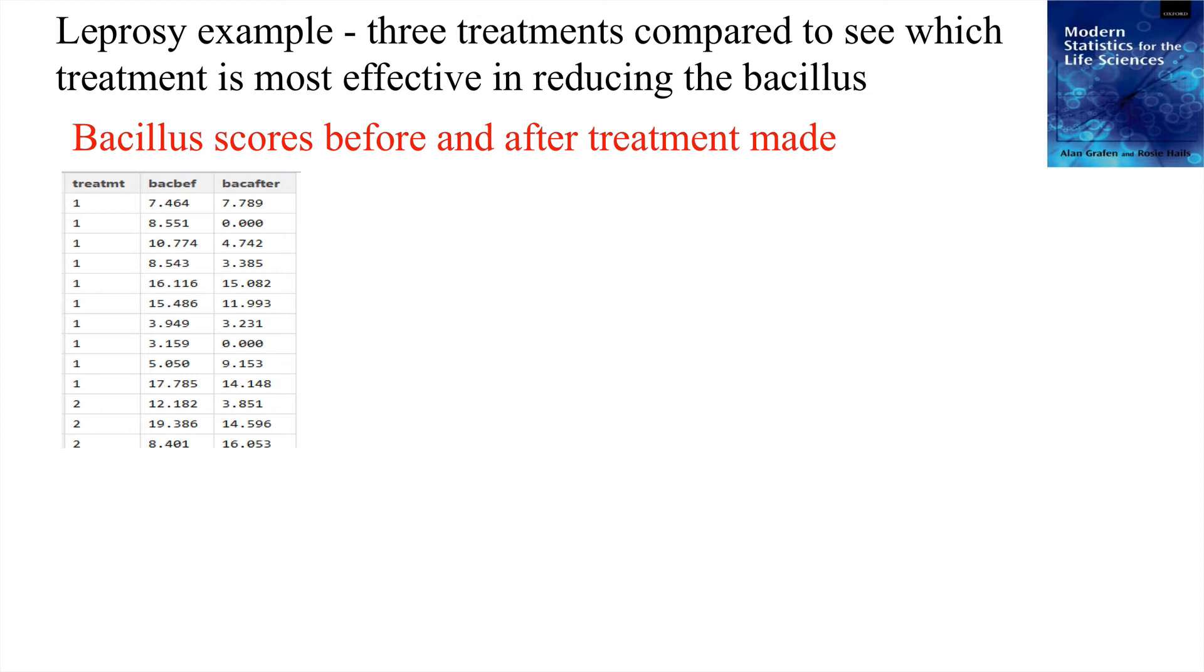They've managed to measure the bacillus scores of patients before and after treatments. There's three different drug treatments that they have received: one, two, and three. Here are the data listed. What we really want to do is to have a look at the bacillus score after, but that might be related to two separate things. One might be the bacillus score before, because if you start with little you might end with little. Likewise if you start with a lot you might end with a lot. But also the treatment. And this is what we're particularly interested in evaluating, whether there's any evidence of a treatment effect.